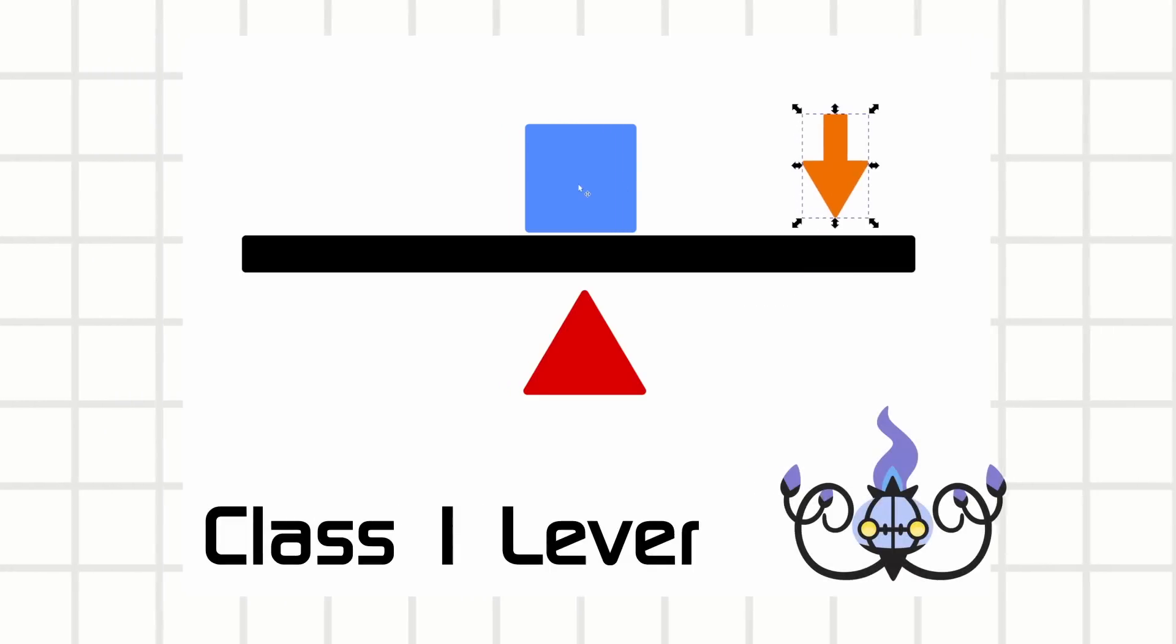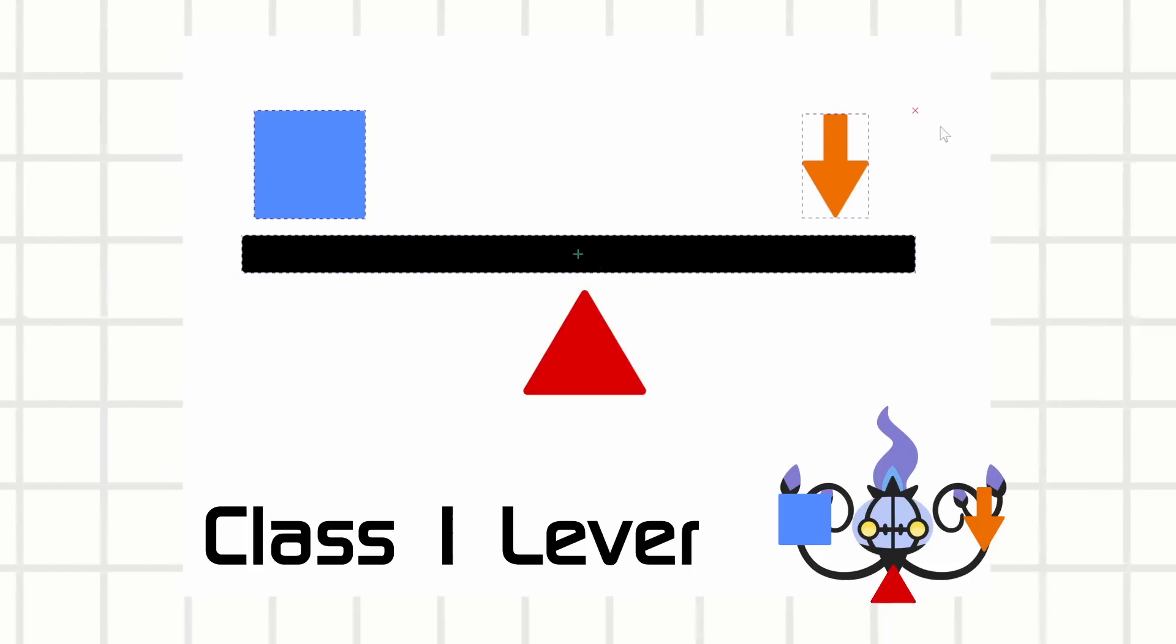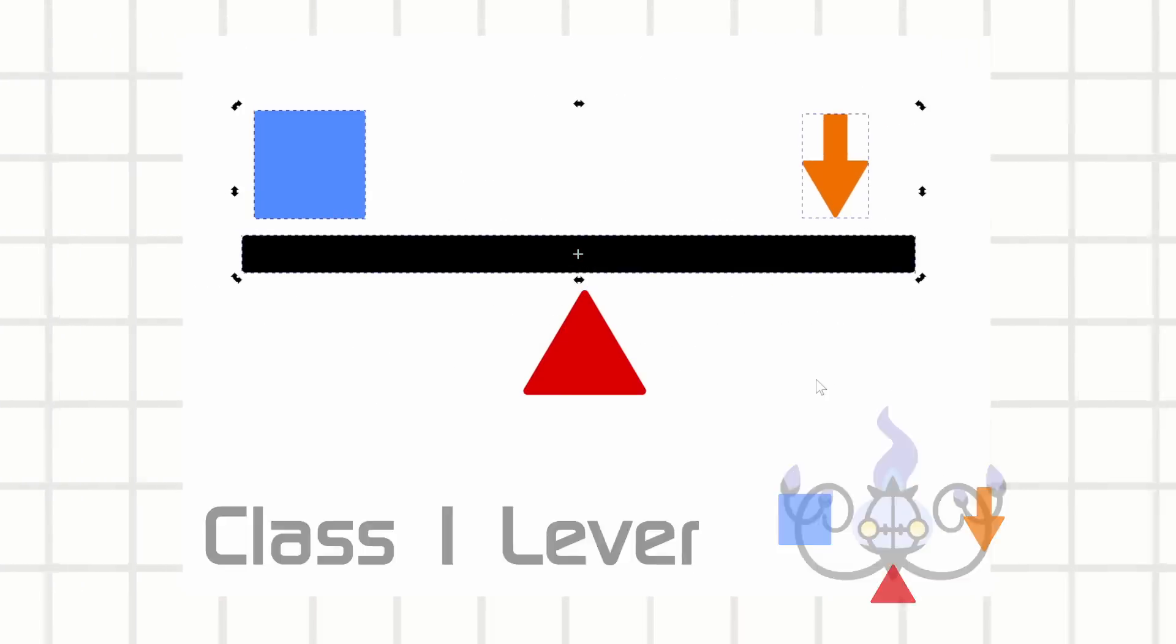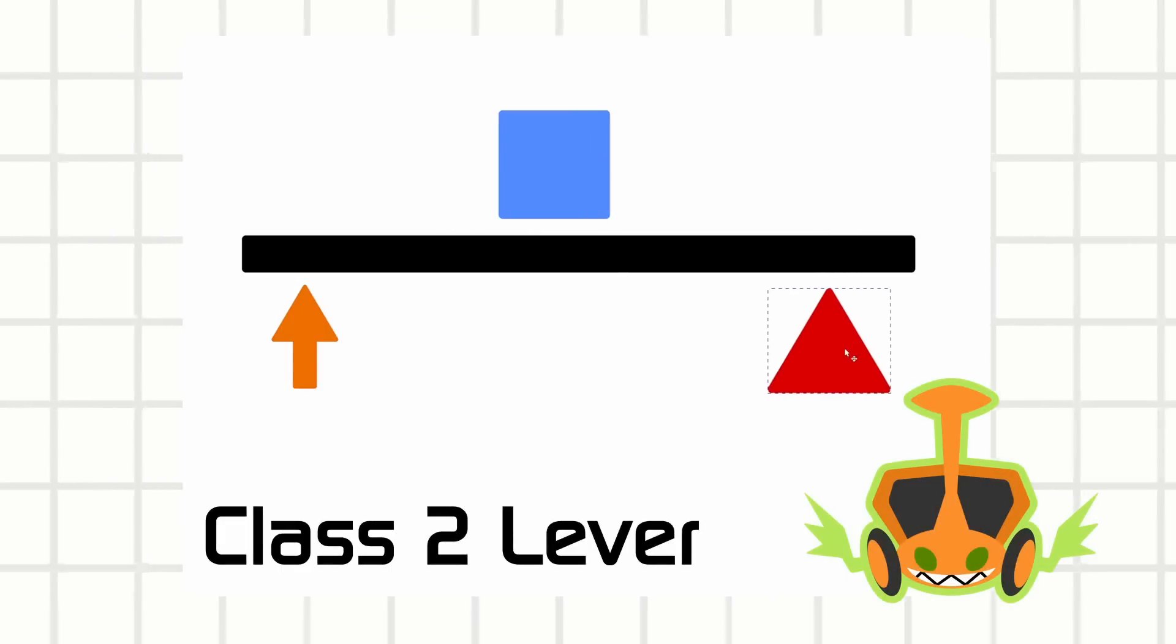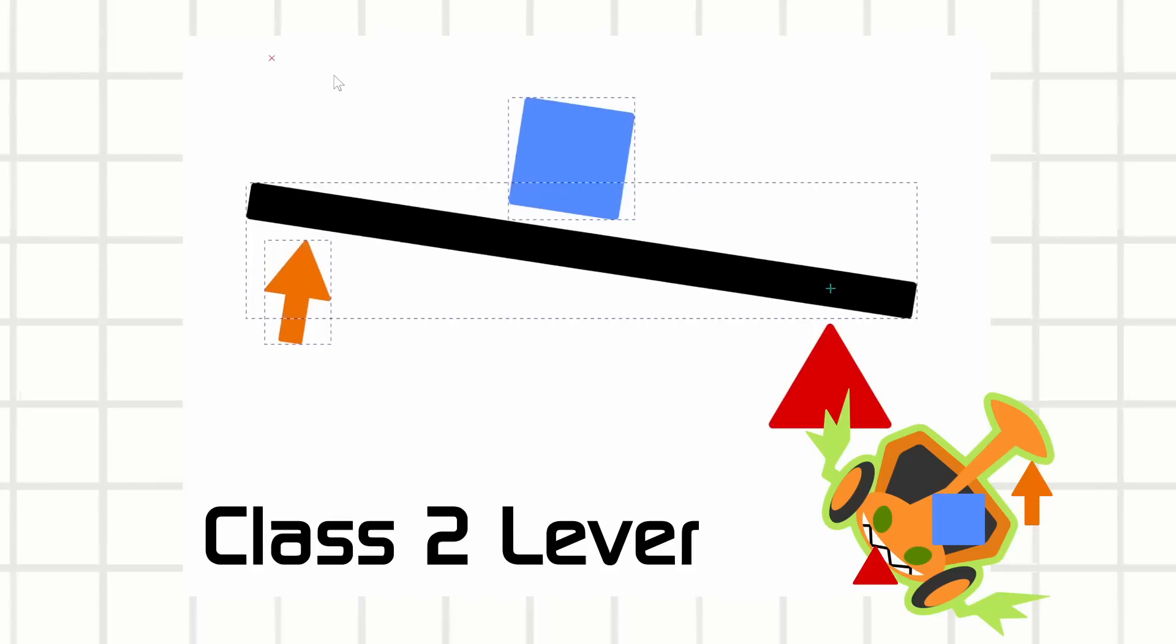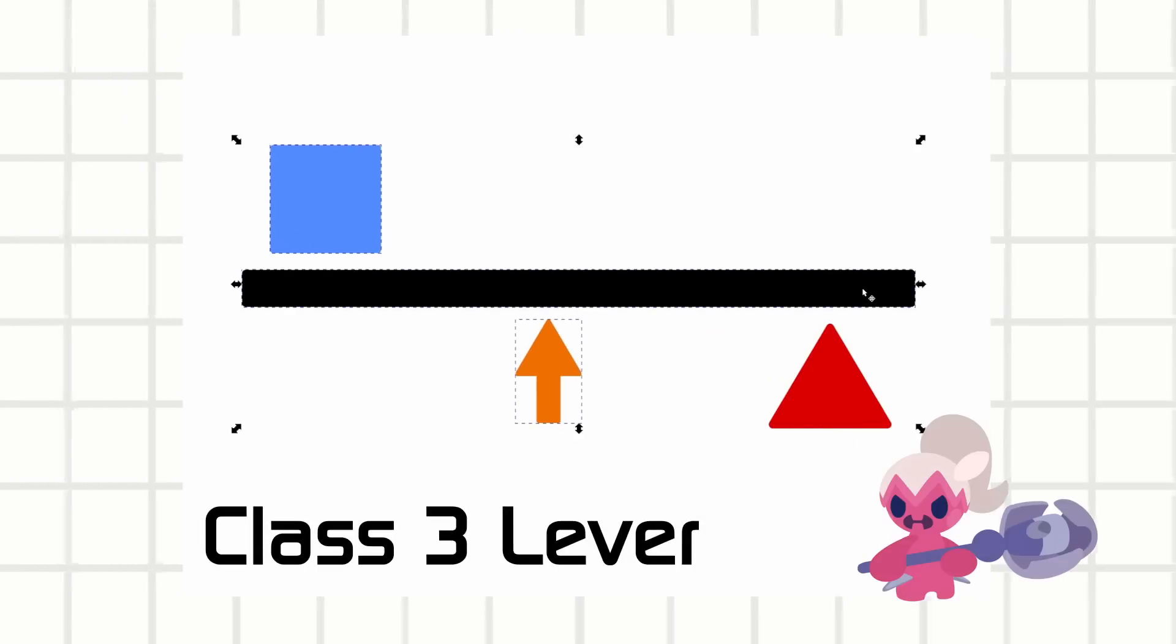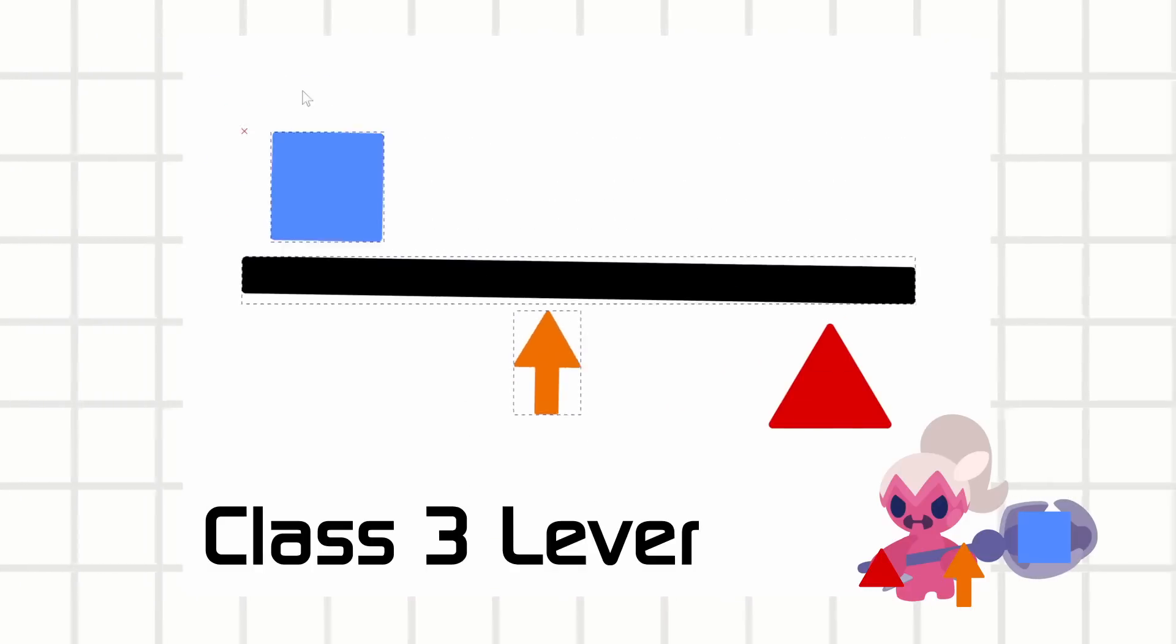In class 1, the fulcrum is between the effort and load. When you apply force downwards, the load would go up. Mechanical advantage would vary. Class 2 has the load in the middle between you and the fulcrum, which should make it easier for you to lift the load. This makes a mechanical advantage of more than one. And lastly, class 3 is your effort going into the middle, which is going to require more from you to lift the load up, yielding a mechanical advantage of less than one.